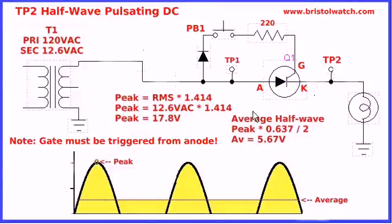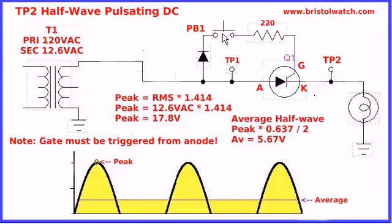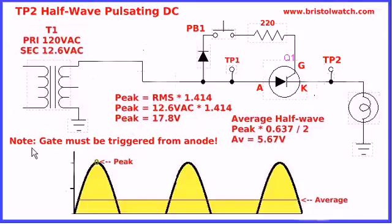Now we come to a Silicon Controlled Rectifier. We can do the same thing, but now we have a third element — a gate. We have the anode and cathode as before on a diode, but now we have a gate and we can turn it on and off with a gate current. If I press PB1, this will turn on, and the waveform across my light bulb load is half-wave. Everything else — average, RMS, and so forth — is exactly the same. Note that the gate must be triggered from the anode side of the circuit.